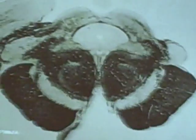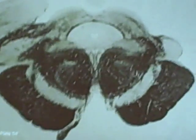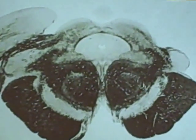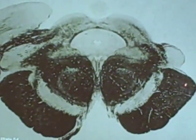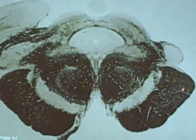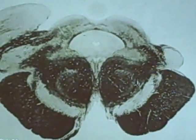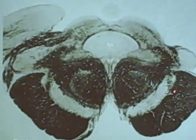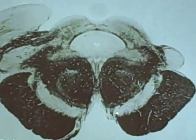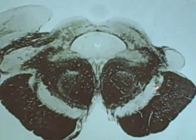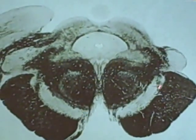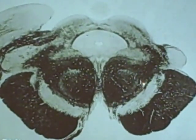Hopefully most of the stuff here is quite familiar by now. Cerebral peduncle. Substantia nigra — it's a nucleus, it makes dopamine, so it's white. And the red nucleus here.